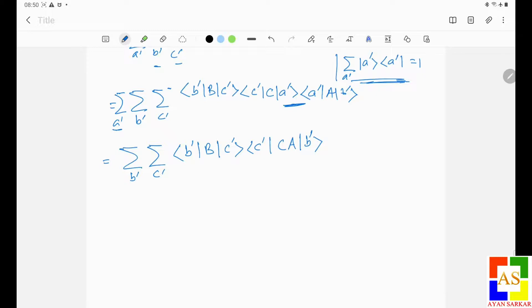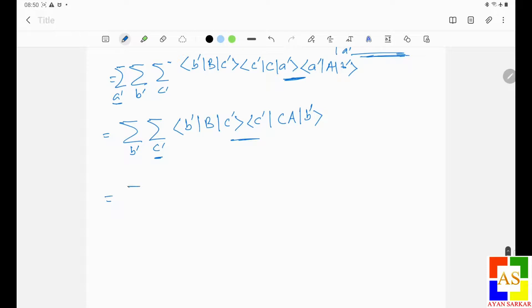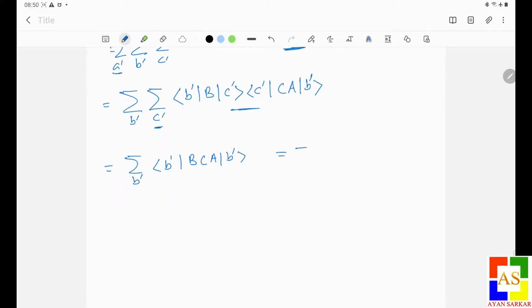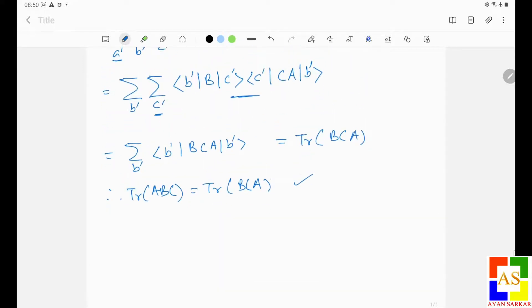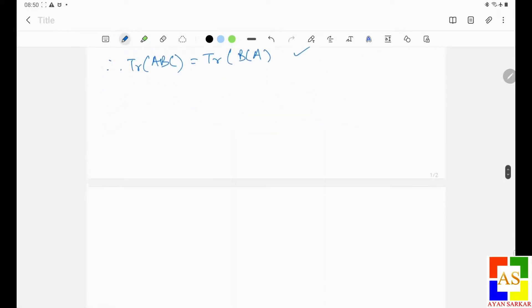Again you see, with summation this is one. So I can write finally, so basically this is trace of BCA. Hence trace of ABC is equal to trace of BCA. So one thing is proved. Now let's see how we can prove trace of ABC is equal to trace of CAB as well.